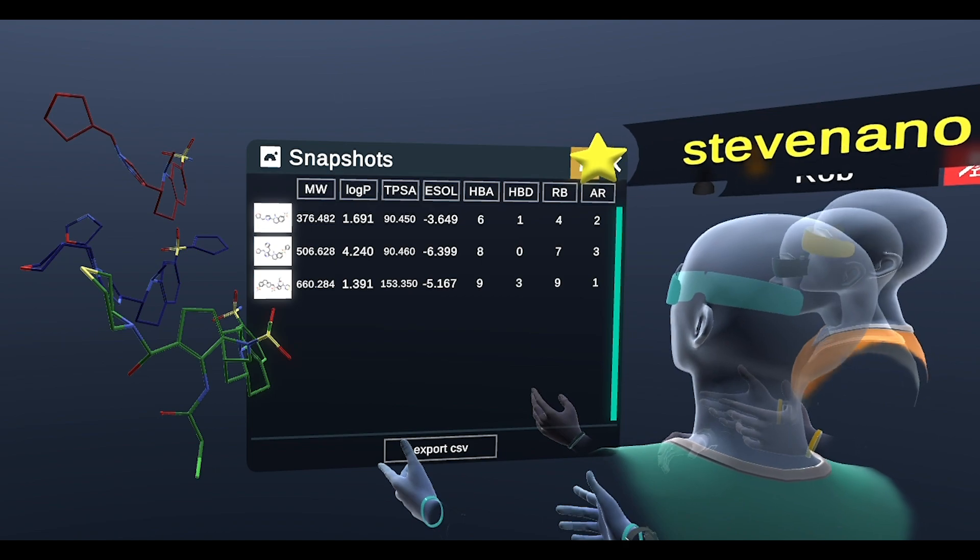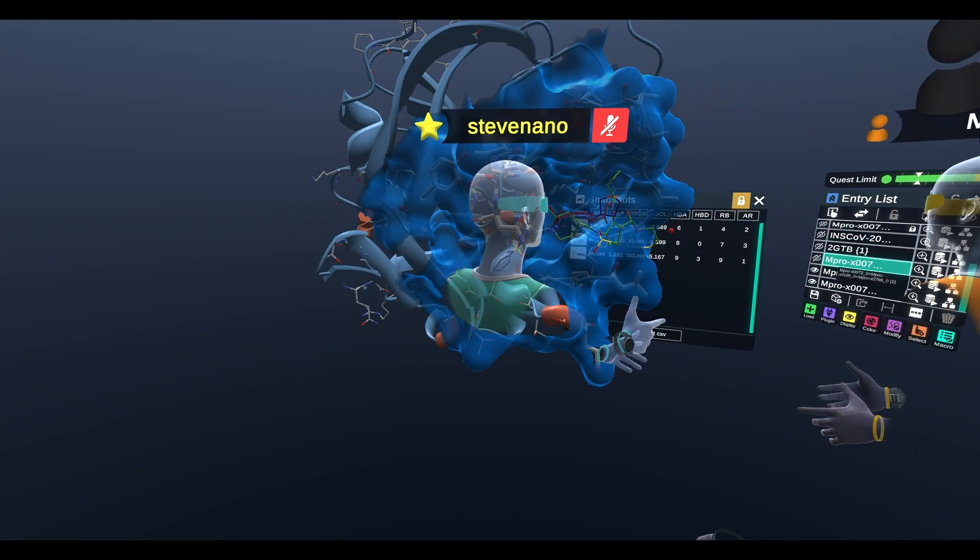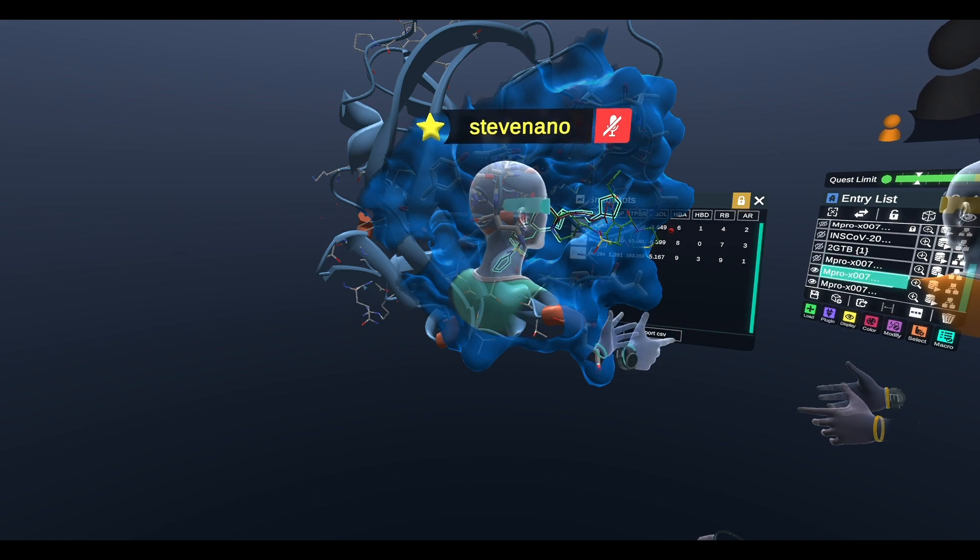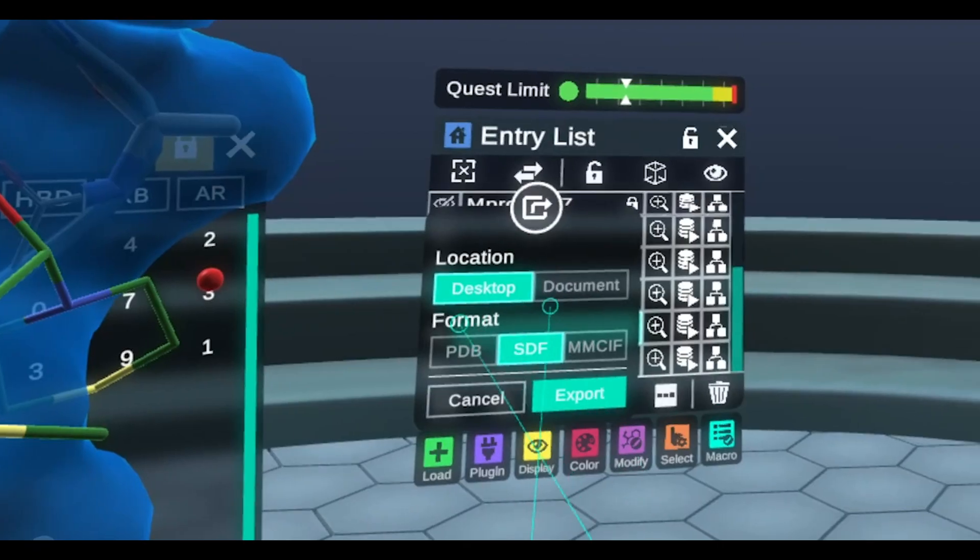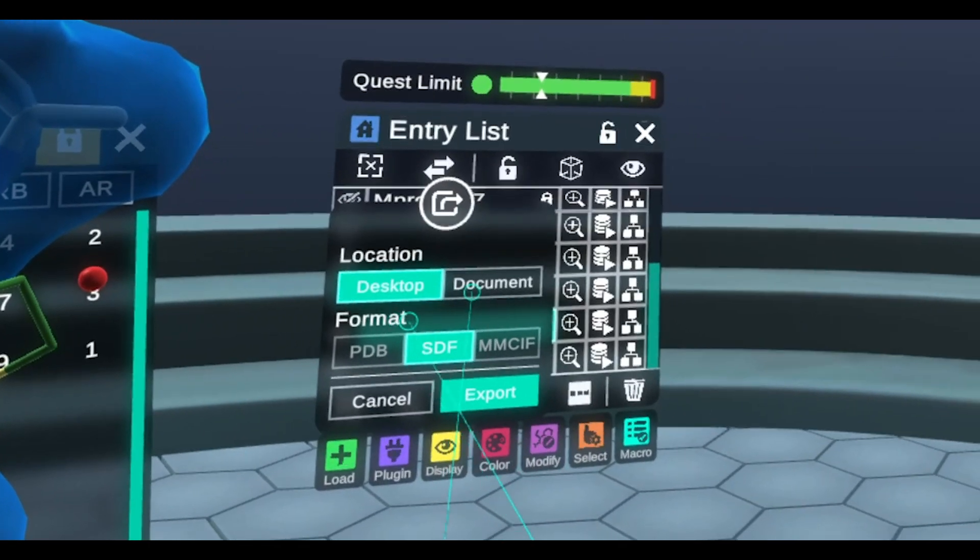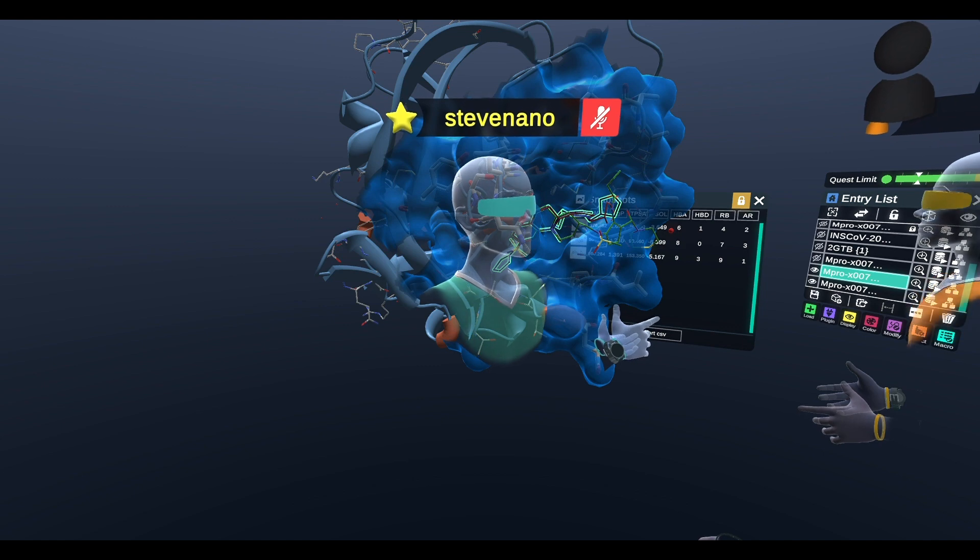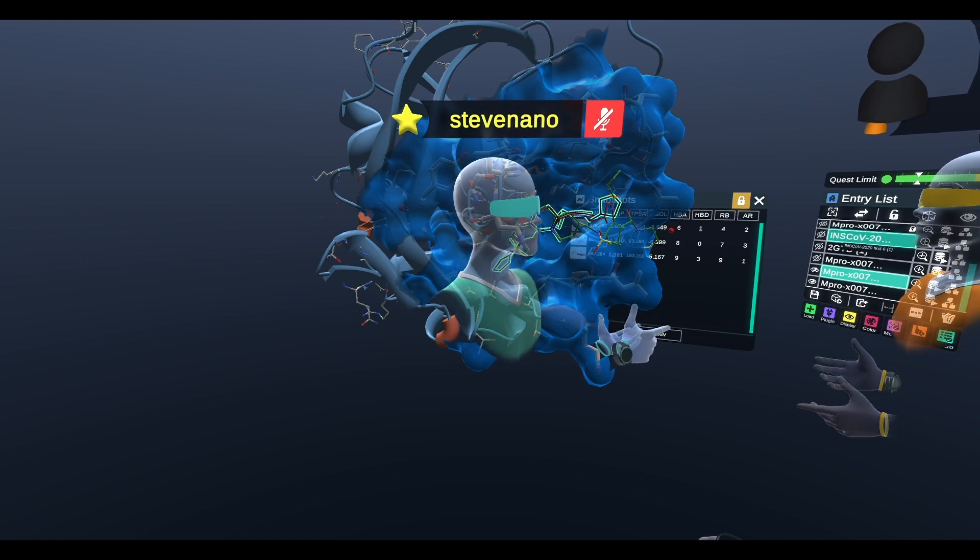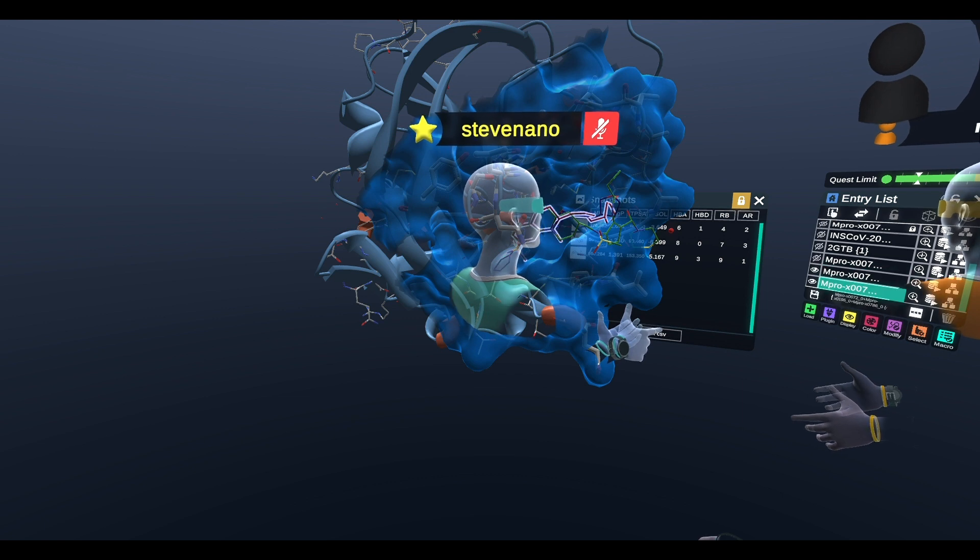All right, and so now we should export all these structures, and so I will go ahead and select—this is Rob's structure—I will click the export button and I will export it to my desktop as an SDF. In 1.17, the next release, we will also be able to export as a SMILES string as well. So now on my desktop I have all three of these structures, and I will be submitting them online to the PostEra.ai website.